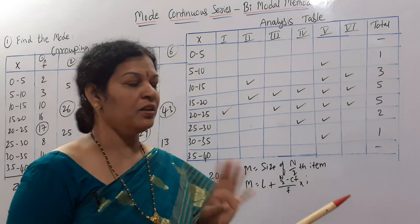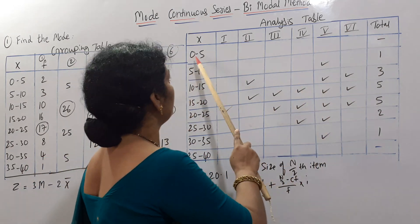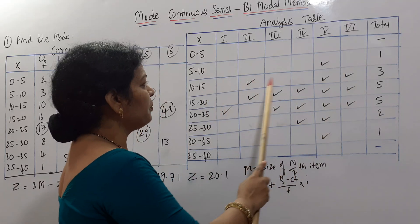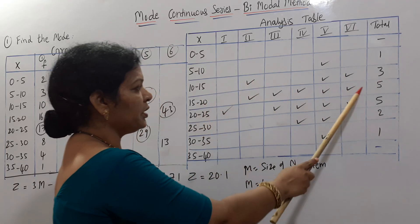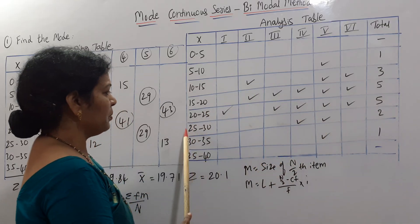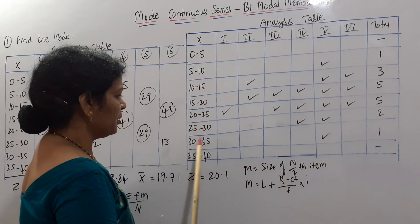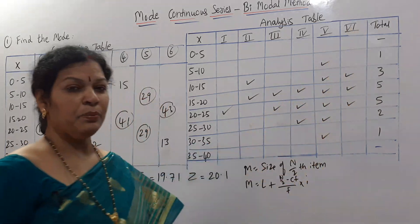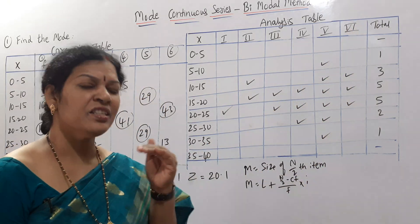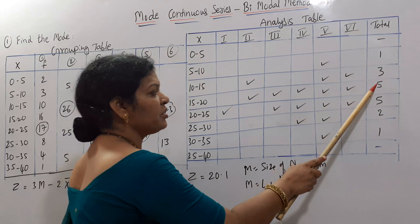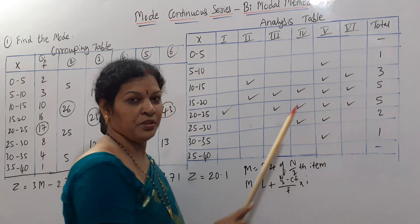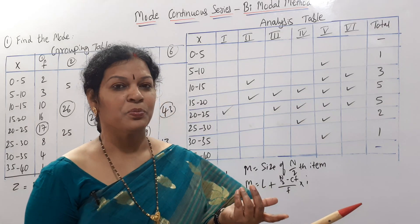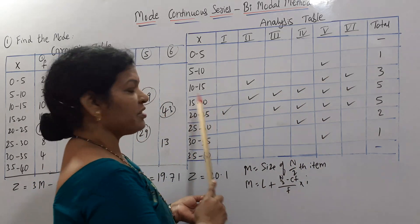The first column is not counted. In 5 to 10, we have 1 point. For 10 to 15 and 15 to 20, the total is 5. For 20 to 25, the total is 5. For 25 to 30, it is 2. For 30 to 35, it is 1 point. There is no value for 35 to 40. The highest total is 5, which appears twice. If we have a clear highest, the mode lies in a single class interval 15 to 20.